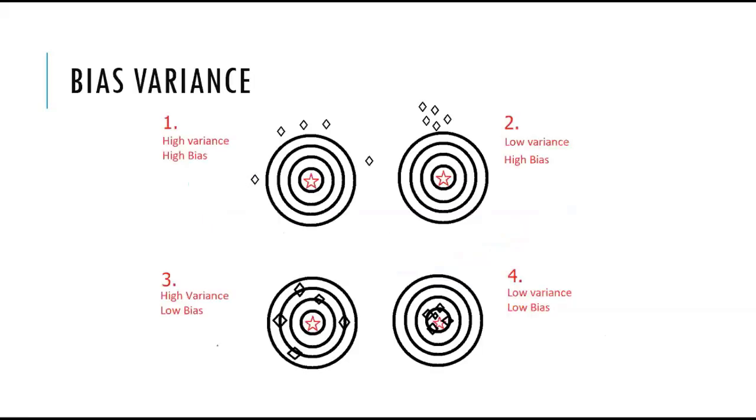We also used bias-variance vocabulary to characterize the performance of the classifier or regressor on training data. Usually there are four situations: high variance, high bias; low variance, high bias; high variance, low bias; or low variance, low bias.